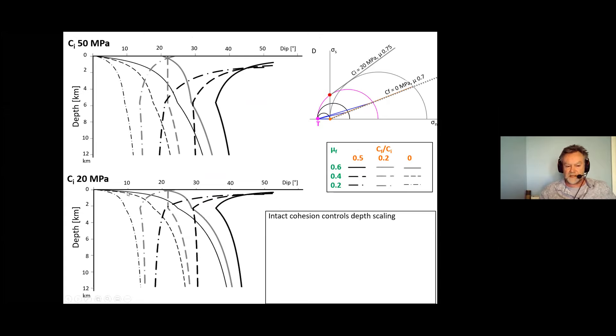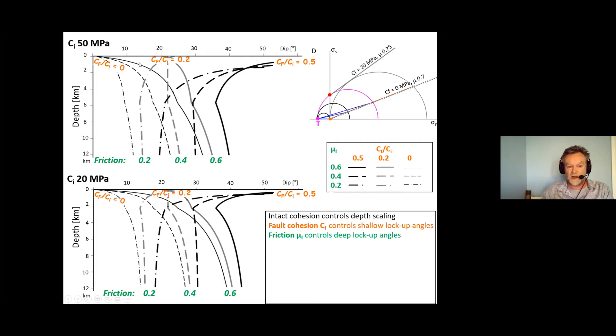And this is what they look like. We have the intact cohesion shown in black controls the depth scaling, you can see that these two plots are pretty much the same apart from the vertical stretch. The fault cohesion determines, so the fault cohesion ratio Cf over Ci controls basically the lock-up angle at the surface which can go for a cohesionless fault virtually down to zero. We find that the friction coefficient controls the deep lock-up but even a high friction fault can slip at very low angles if it has no cohesion as you can see in this region.